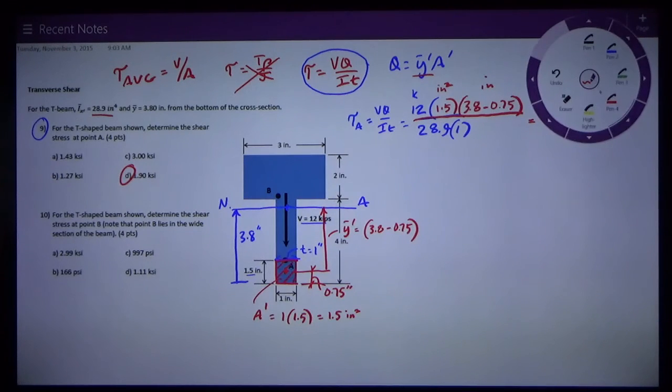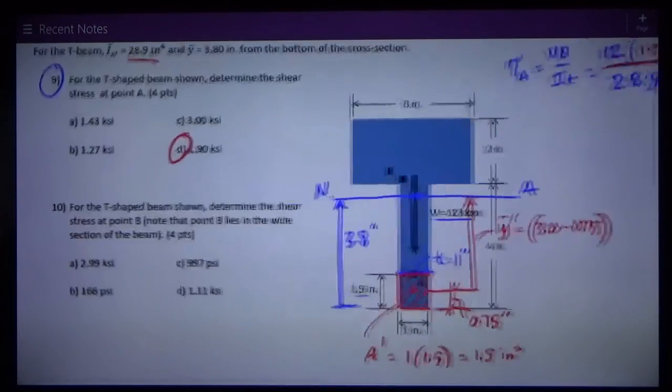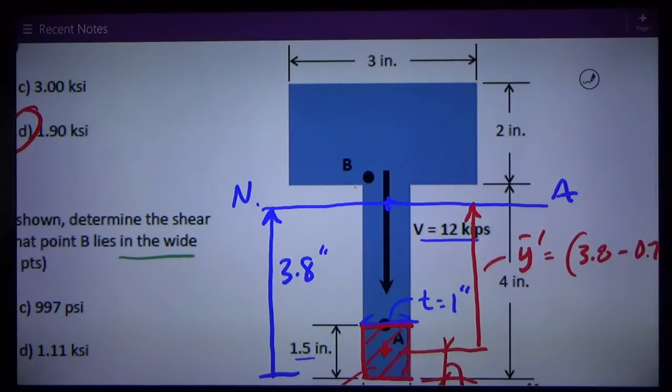Now, I want to know in problem 10, shear stress at point B. And I'm told that point B lies in the wide section of the beam. That means it lies just barely above that point right there. Which, this has to do with T. So V is still the same. I is still the same.